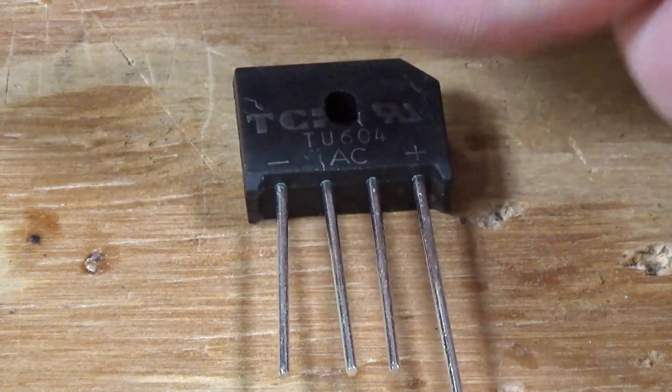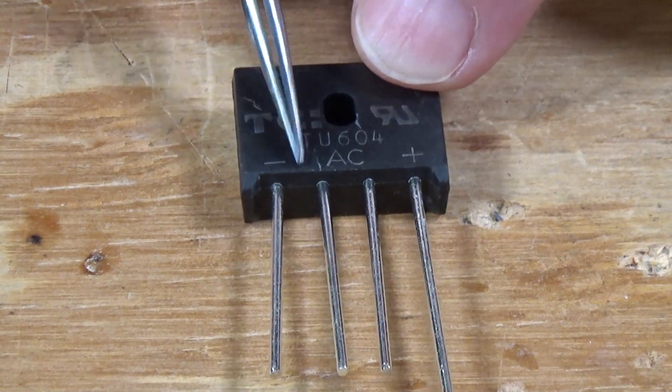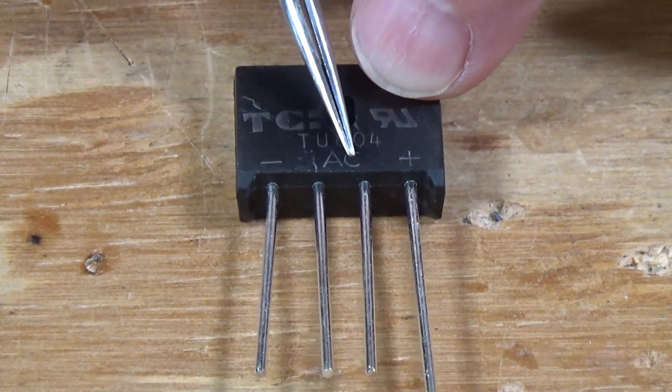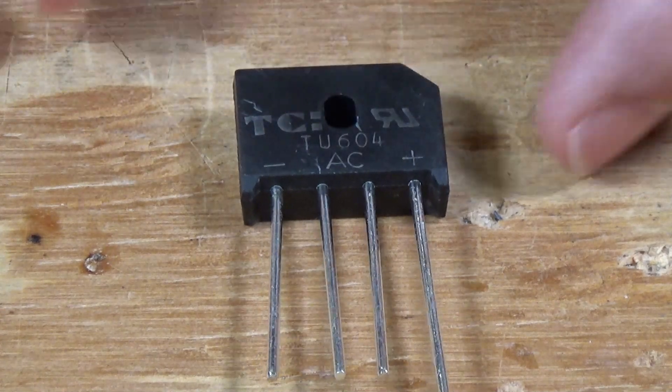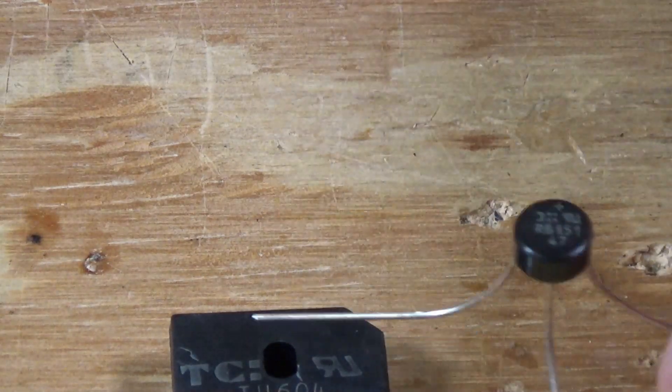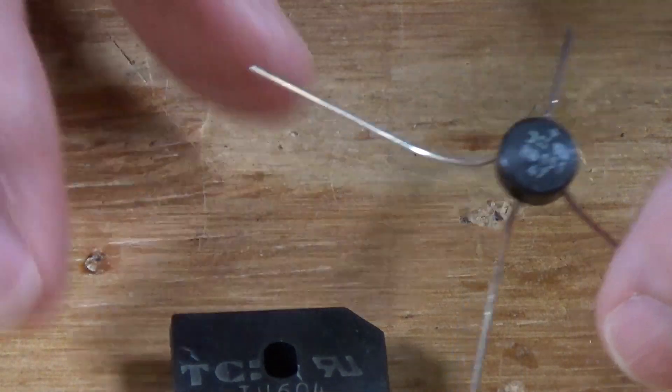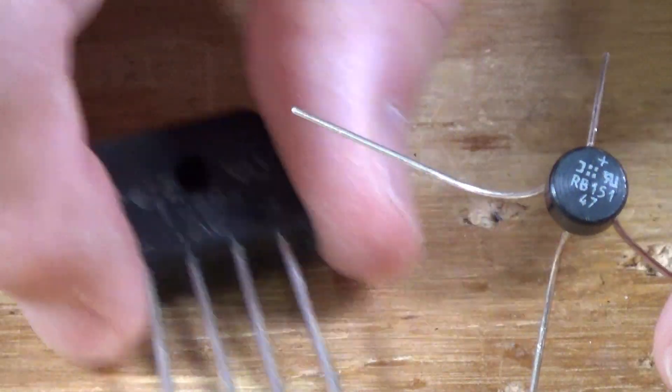As you can see, there's my thumb right there on it. And it's marked plus, minus, and AC here on the package for these terminals. You don't need anything this big. But what I wanted to point out is they come in various sizes. So you can get something this big, or you can get something that big, and all kinds of things in between, depending on your needs.